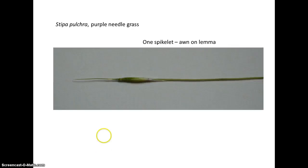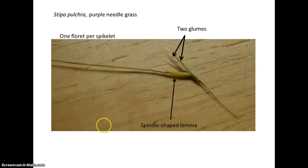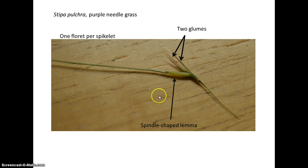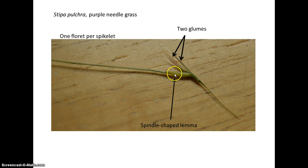One more grass I want to introduce is a nice native bunch grass, Stipa pulchra, or purple needle grass. It has a very open inflorescence and does have a purple hue to it. We have a spikelet here that has only one floret, and the awn — the long structure — is on the lemma. In the next picture, we bent things back so you can see the two glumes of the spikelet with one floret inside. In the genus Stipa, we have what are called spindle-shaped lemmas, meaning the two edges wrap around each other, kind of like a spindle or a bowling pin — very characteristic of the genus.